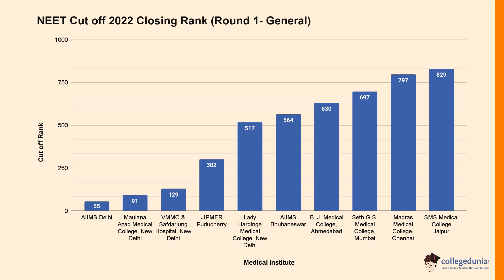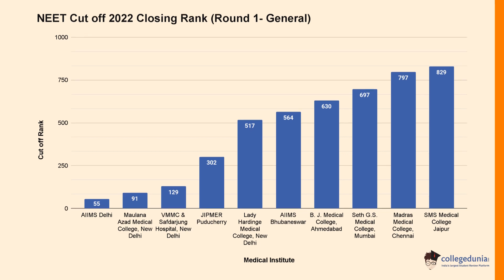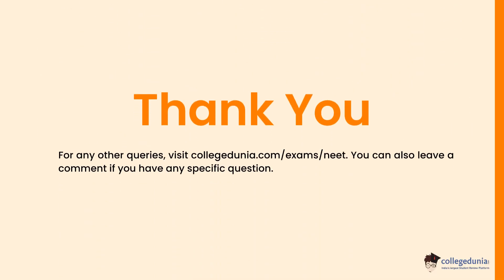For NEET last year cutoffs at top medical colleges in 2022, the closing ranks for the General category were: AIIMS Delhi — 5, Maulana Azad Medical College — 91, VMMC Safdarjung Hospital — 129, JIPMER Puducherry — 302, Lady Hardinge Medical College New Delhi — 517, and AIIMS Bhubaneswar — 564. For more details, visit our website and leave a comment if you have any specific questions.